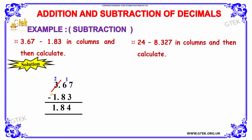6 cannot be subtracted from 8, so we borrow. When we borrow, 3 becomes 2 and we get 1 here, making the term 16. 16 minus 8 gives 8. And subtracting 2 minus 1, it's 1.